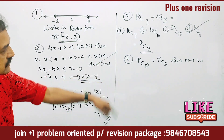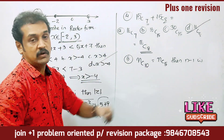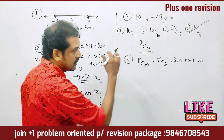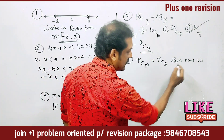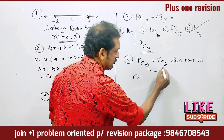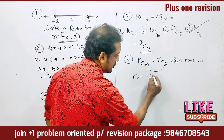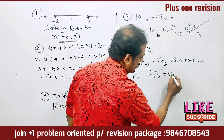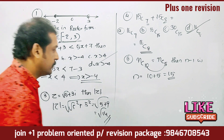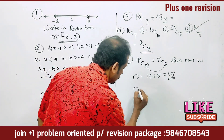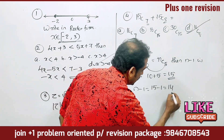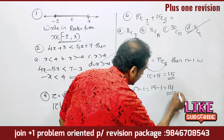Next: NC10 is equal to NC5. What is N minus 1? When nCr = nC(n-r), we add the two indices: 10 + 5 = 15, so N equals 15. Therefore N minus 1 is equal to 15 minus 1, and the answer is 14.